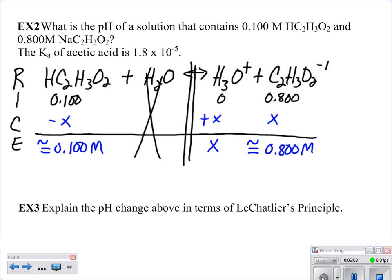When we go through the calculations, 1.8 times 10 to the negative 5th equals 0.8x over 0.1. So you get x equals 2.25 times 10 to the negative 6th molar.